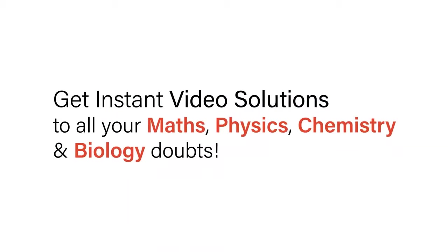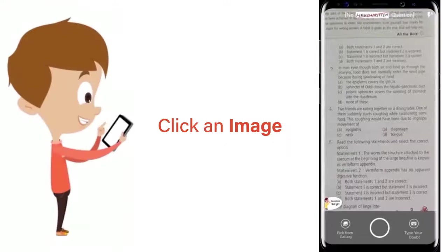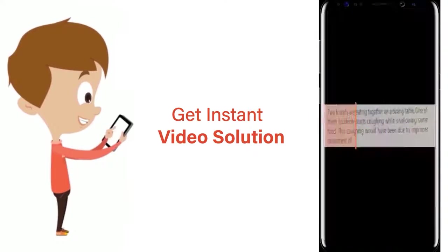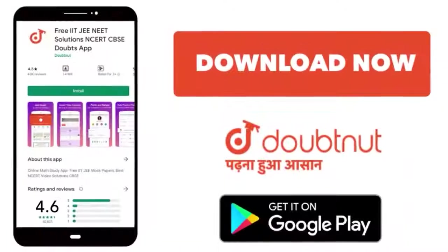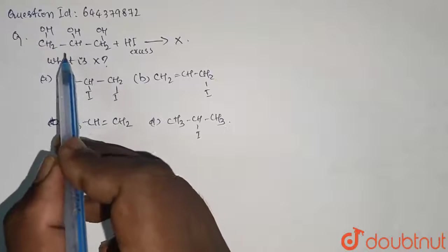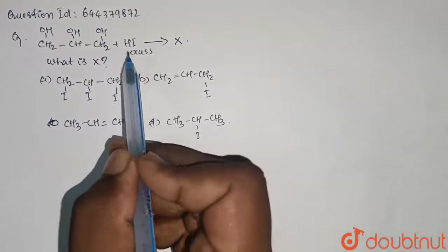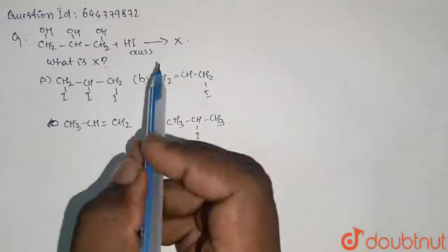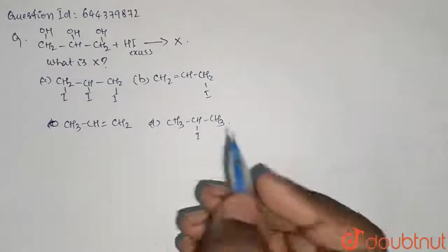With Doubtnut, get instant video solutions to all your math, physics, chemistry, and biology doubts. Just click the image of the question, crop it, and get instant video solutions. The question here is CH2OH-CH2-CH2OH plus HI in excess gives X. So what is compound X? We have been given four options.